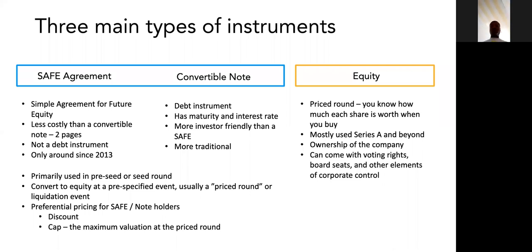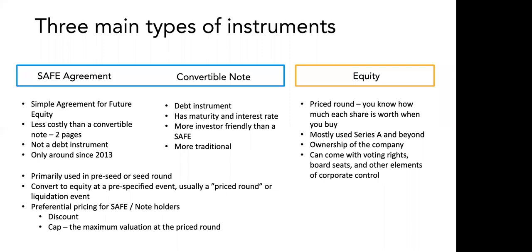The other thing that people do is a cap. So let's say I give you $100, and I expect that in a year when this converts, the company will be worth $1,000 — so my $100 is worth 10% of the company. But it goes really, really well, and a year from now instead of being worth $1,000, your company is worth $100,000. So that person who put in $100 early thought they were buying around 10% of your company, and it turns out they were only buying 1%.